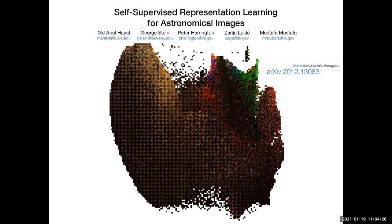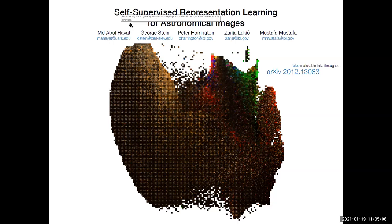We also have George Stein, the duo of speakers today. George is a postdoc at Berkeley Lab and also at the Berkeley Center for Cosmological Physics. George's research is centered on machine learning for cosmology, with areas of interest including cosmological simulations, generative models, anomaly detection, and self-supervised learning. Without further ado, I'll let you start your talk. Please go ahead.